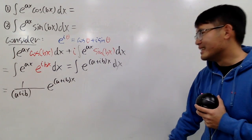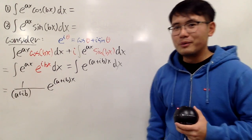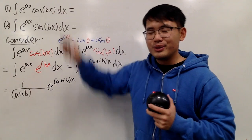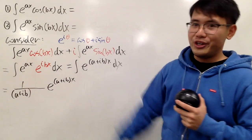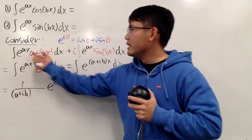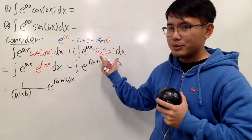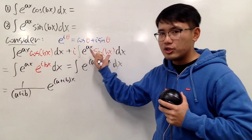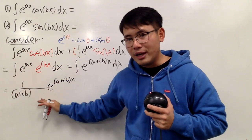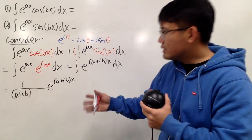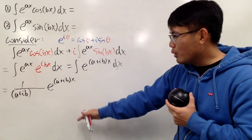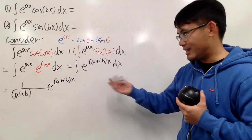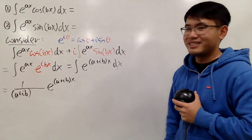Now, if you look at the original two integrals, they are purely real. If you look at the combined expression, this is real plus i times real, so we can say the first integral is the real part and the second integral is the imaginary part. We just need to do some more work to figure out the real part and the imaginary part, then mix and match.